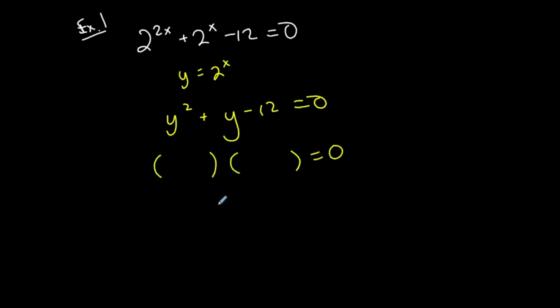Now you can see that this is a very basic quadratic equation to solve that I can just straight up factor. Plus 4, minus 3, so I have y is -4, and y is 3.